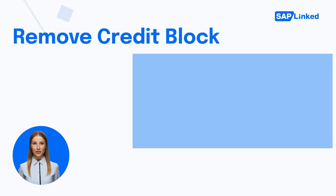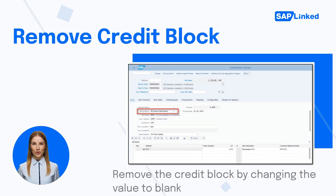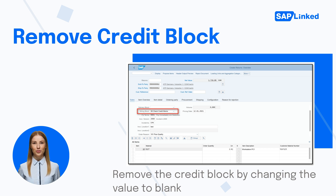Now we will cover how to remove the credit block from the return order. To remove the credit block, enter transaction code VA02 in the command field. In the Billing Block field, change the value to blank and then save the return order.